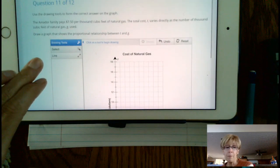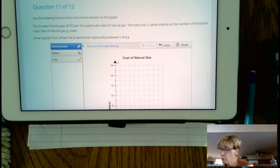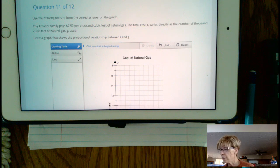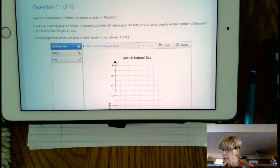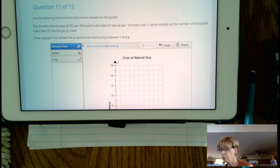It might be nice if you could see the problem here. It says the Amador family pays $7.50 per thousand cubic feet of natural gas. The total cost, T, varies directly as the number of thousand cubic feet of natural gas, G, used. Draw a graph that shows the proportional relationship between T and G. It varies directly.